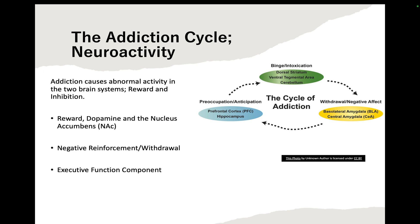When we think about the addiction cycle and how it impacts neuroactivity, addiction causes abnormal activity within two brain systems: the reward system and the inhibition system. The reward system involves dopamine located in the nucleus accumbens reward centers — all drug abuse activates this mesolimbic reward circuit, increasing extracellular dopamine levels within the nucleus accumbens. There is also negative reinforcement and withdrawal, as abusing drugs activates the brain's stress response by releasing corticotropin-releasing factor within the amygdala. Additionally, addiction impacts the executive functioning component, causing loss of control, increased impulsivity, and decision-making impairment, primarily within the prefrontal cortex and hippocampus, where decision-making, relationships, and emotions are controlled.